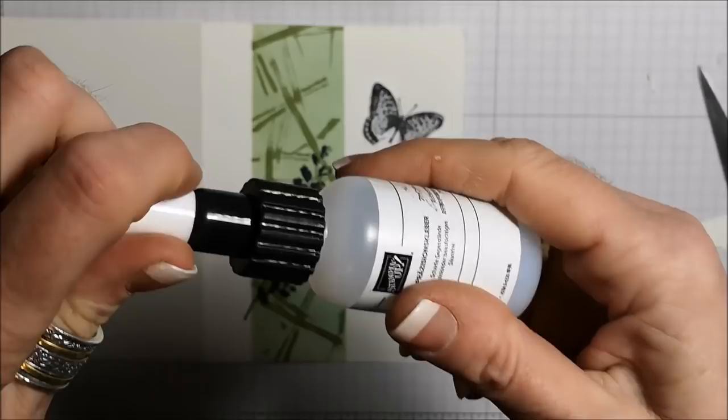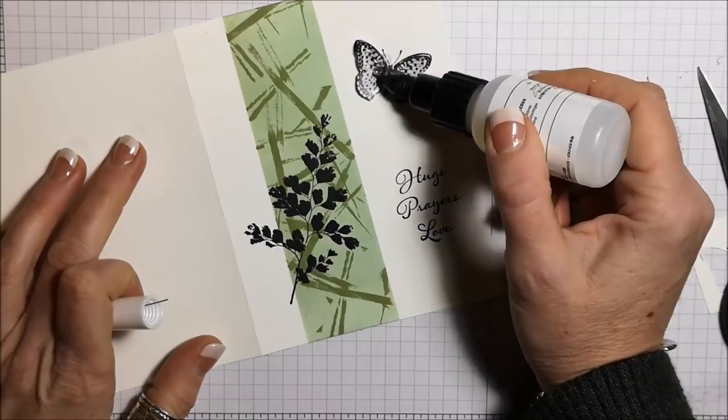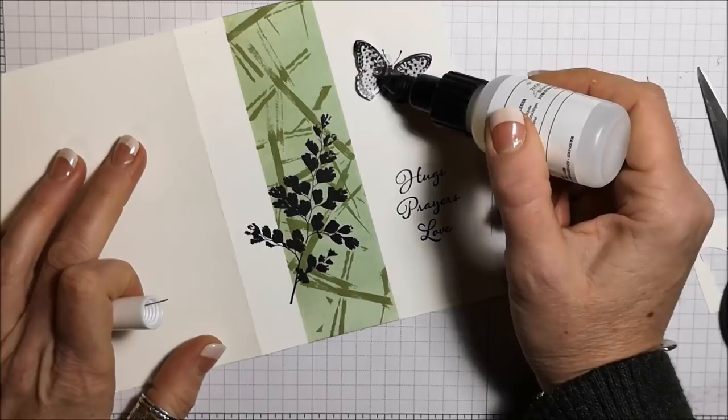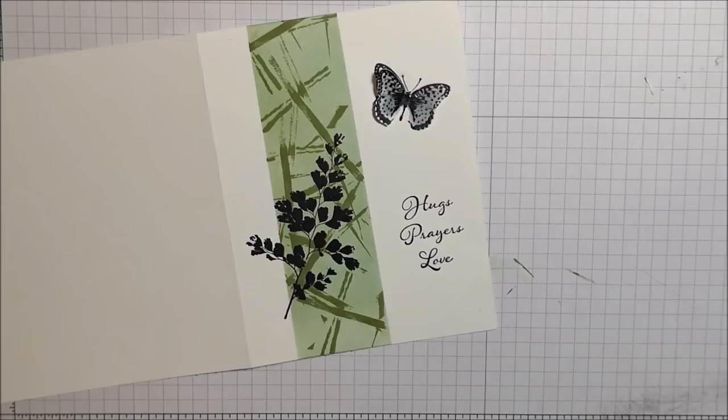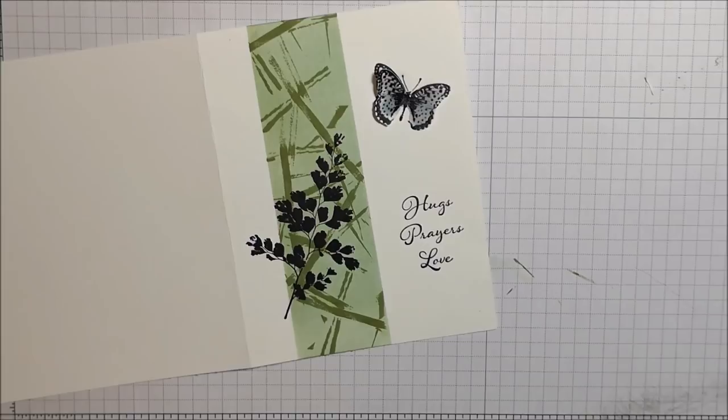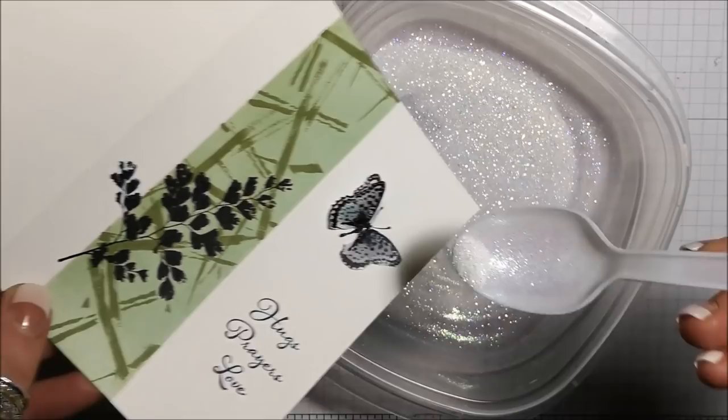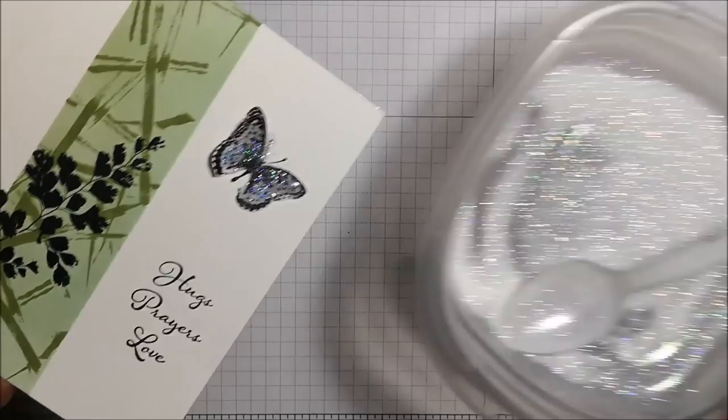And I'm taking my fine tip glue and I'm going to add some Dazzling Diamonds glitter to the butterfly. Whoops. And I just had a big blob fall out. I'm going to try to lift some of that glue up. I really didn't want that much glue on there.